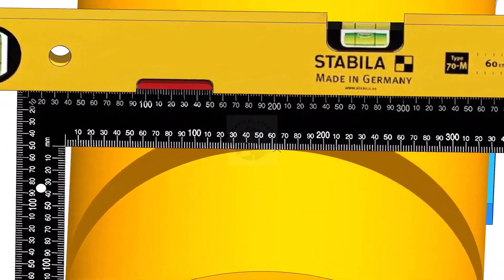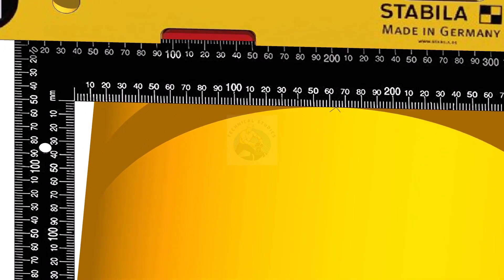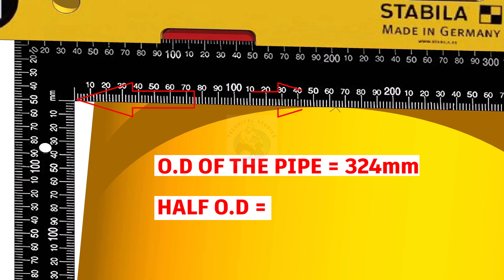Now, mark half diameter of the pipe on the top of the pipe as shown. Since the OD of this pipe is 324 mm, I marked 162 mm here.